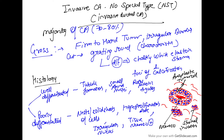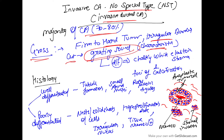Talking about the pathology of invasive carcinoma no special type: the no special type is also known as invasive ductal carcinoma. Majority — 70 to 80% — of carcinomas are NST type. On gross appearance, it is a firm to hard tumor with irregular borders. When cut, it creates a characteristic grating sound because of chalky white elastotic stroma and foci of calcification.